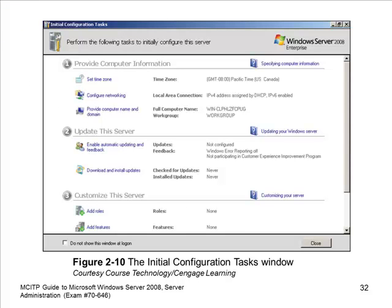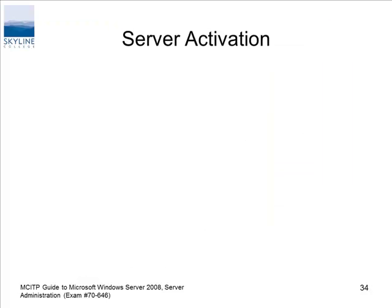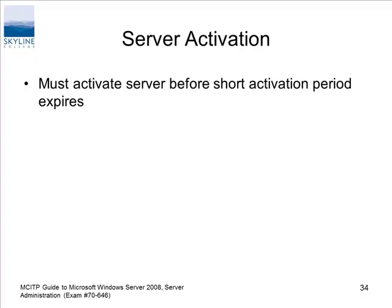Customize the server: set the time zone, configure networking, put in your static IP — this is not anything you couldn't do through the networking portion of the control panel. Go through it to see what it does: download and install updates, enable automatic updating — I have you disable that in the lab. Provide a computer name based on what you have here. And if you don't check 'Do not show this at logon,' every time you start up this is what you're going to see. It's going to tell you it can't activate, but it's going to run for 30 days and then you can extend it three more times for 30 days.